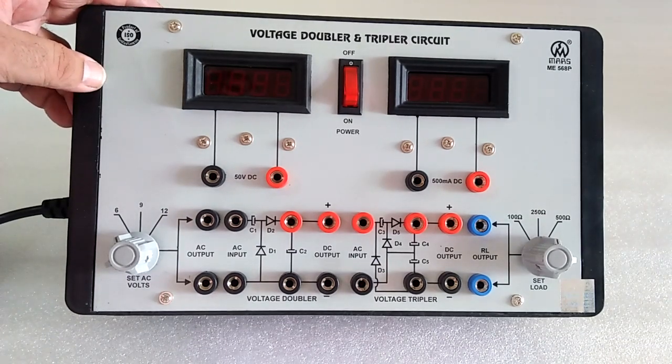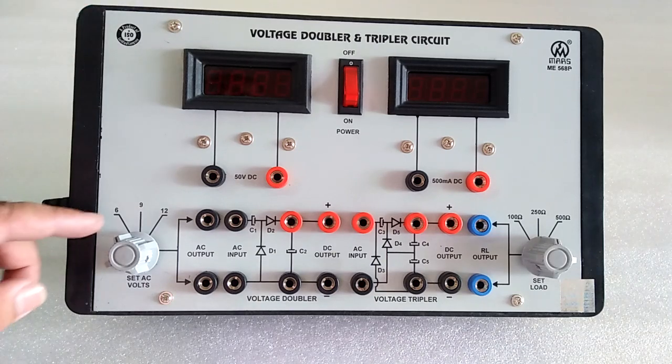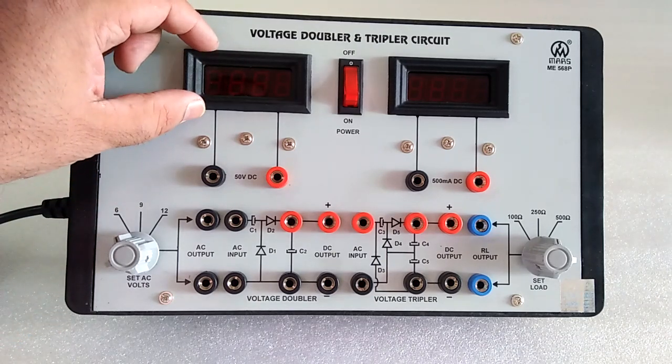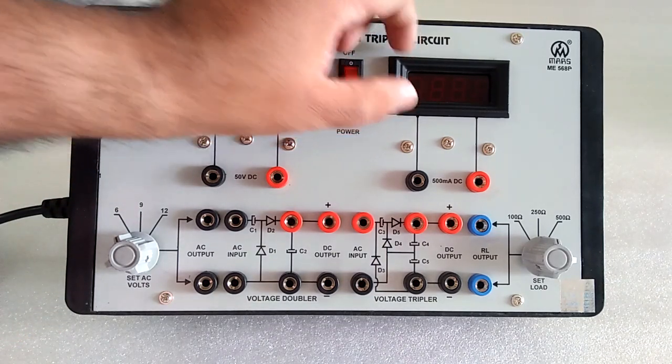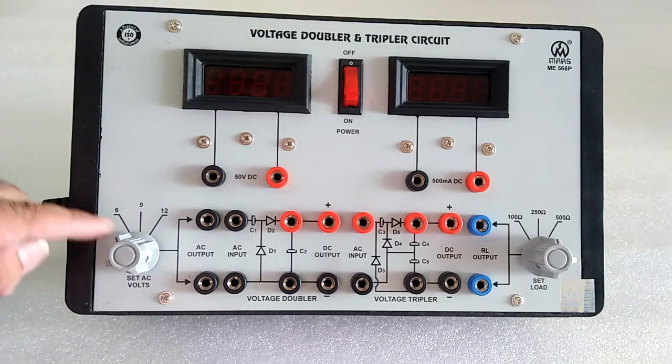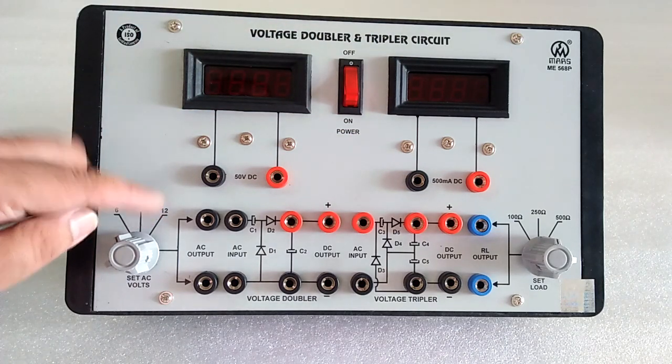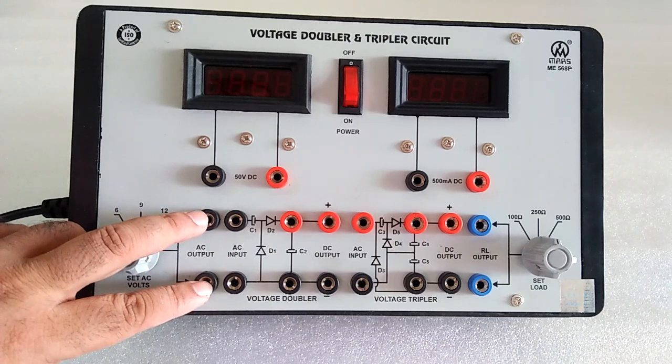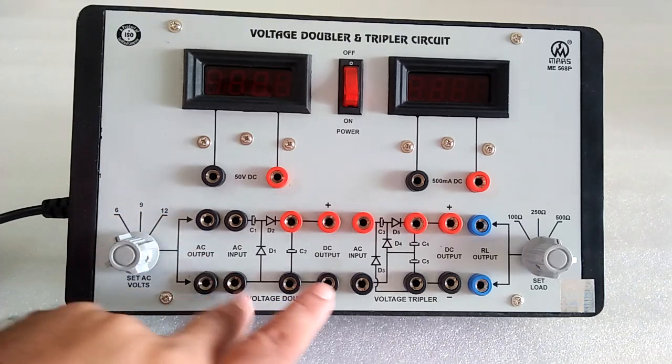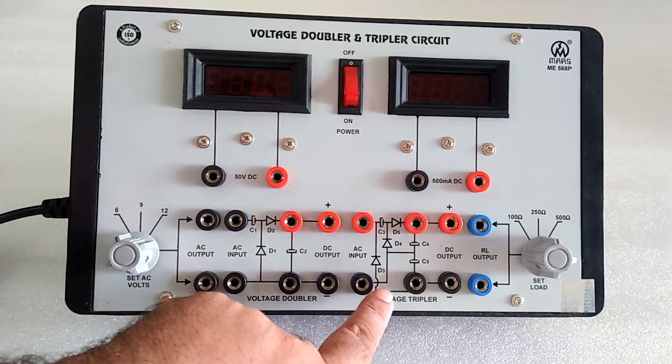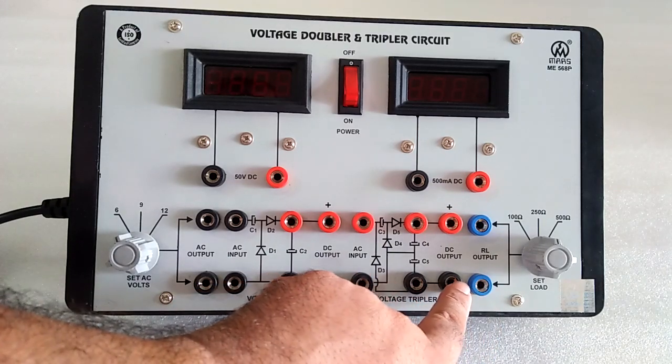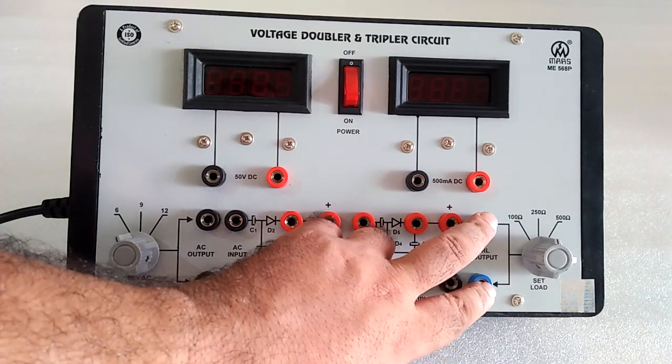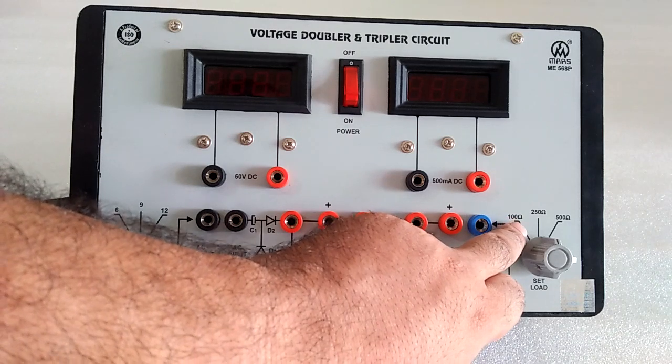This is a voltage doubler and tripler circuit. Here we have the voltmeter and current meter. Here is the AC voltage tab with 6 volt, 9 volt, and 12 volt options. You get the AC output over here. This is the circuit for the voltage doubler, and here is the circuit for the voltage tripler. This is the load section with three types of loads.